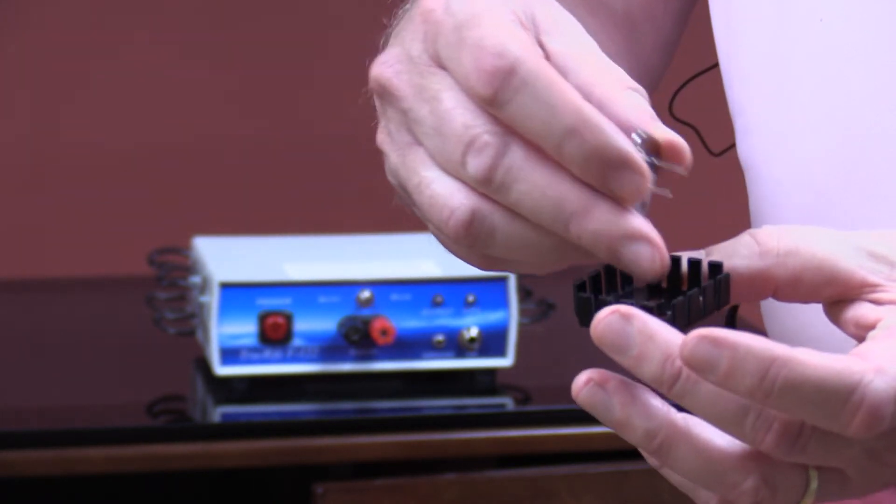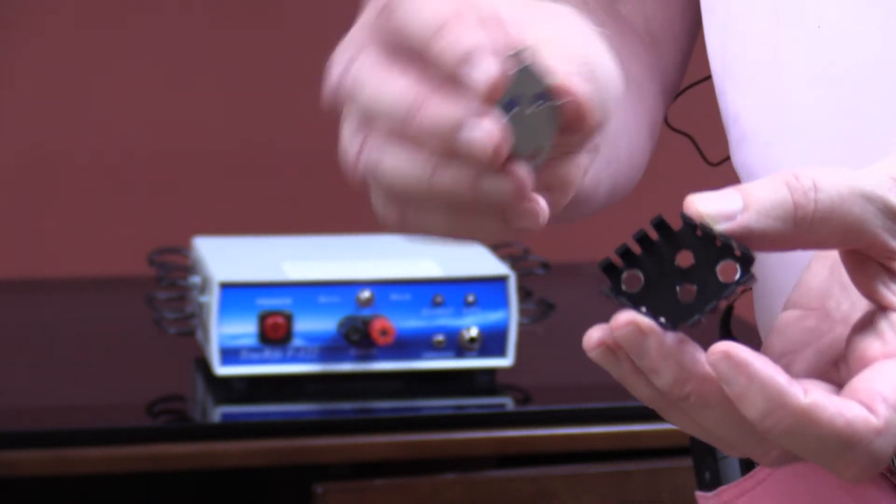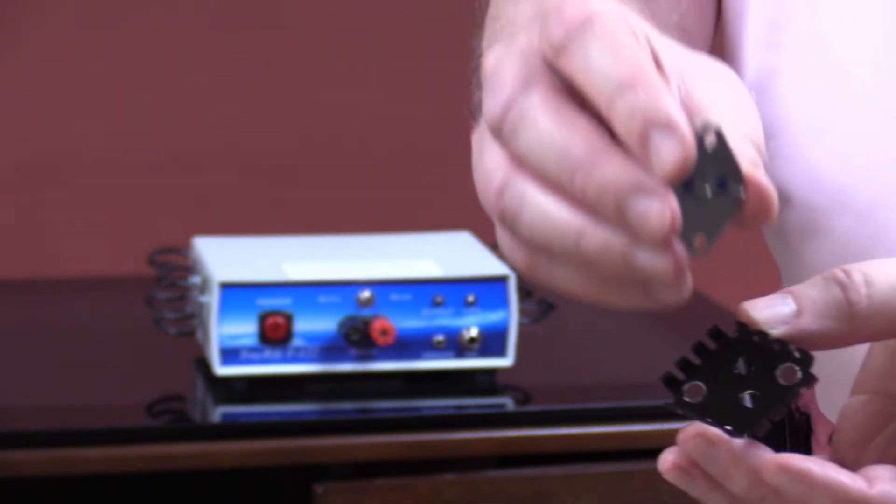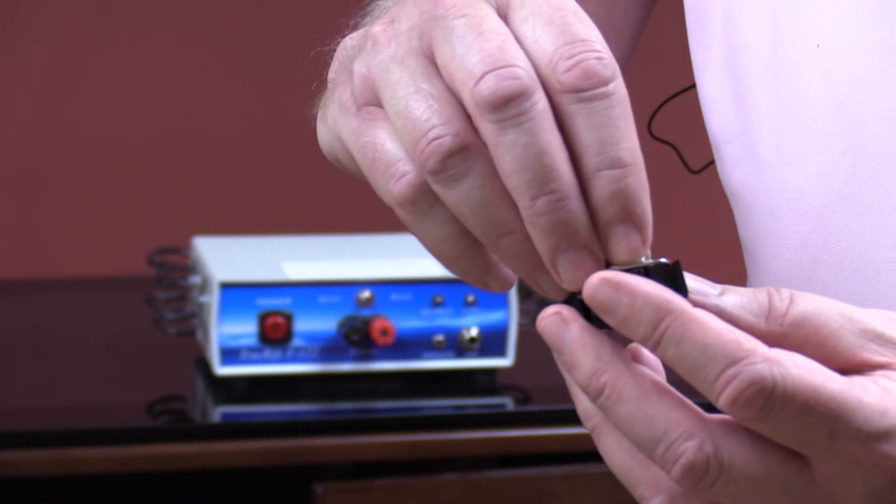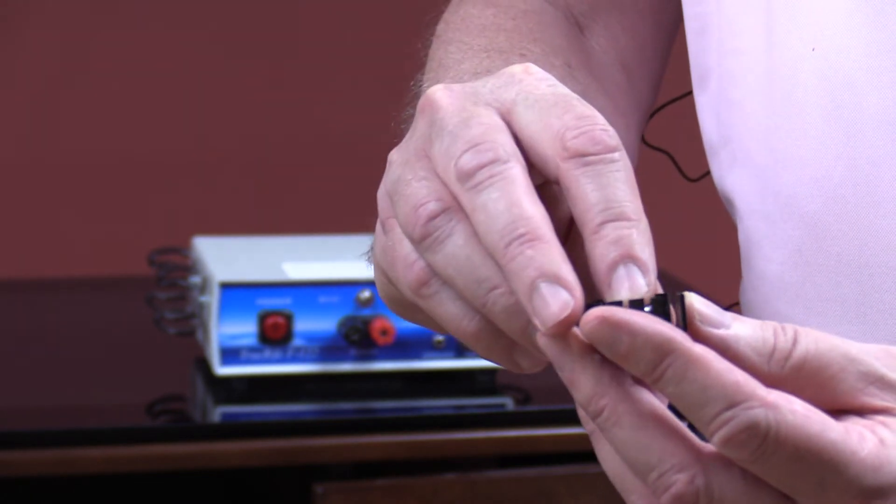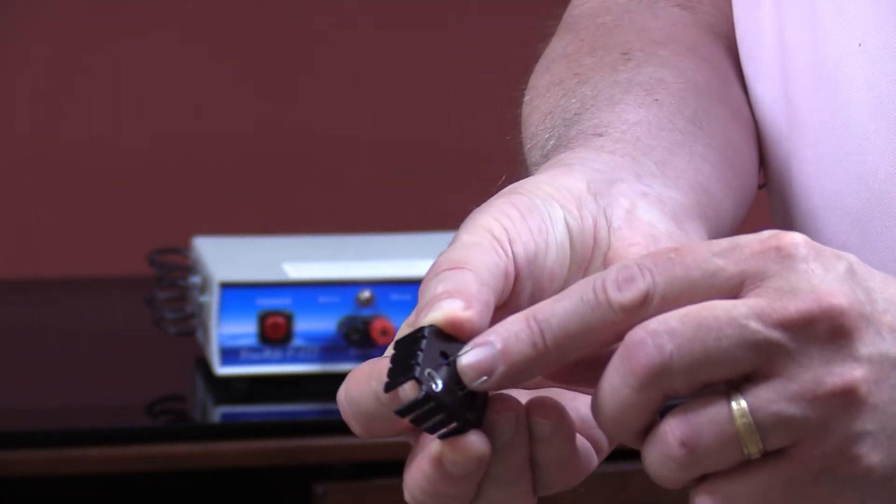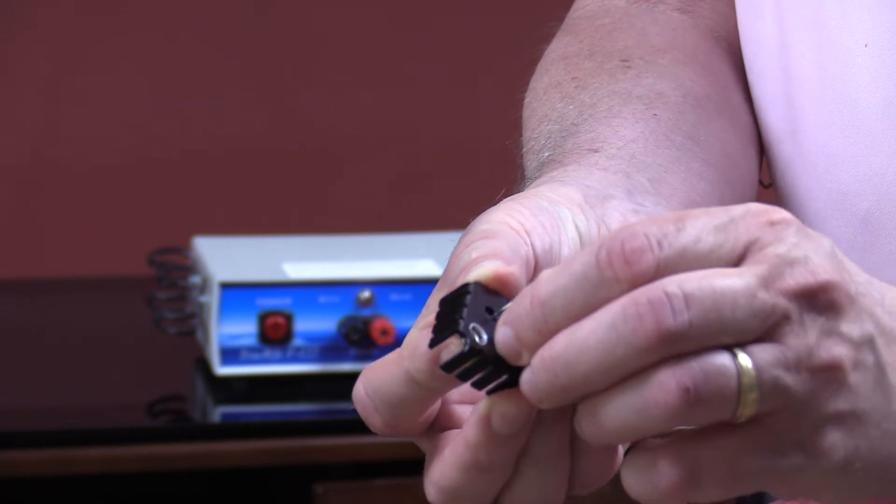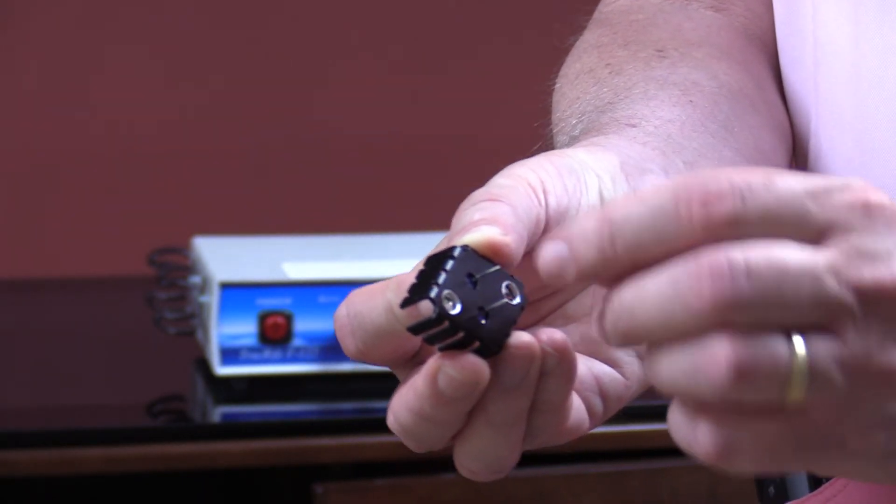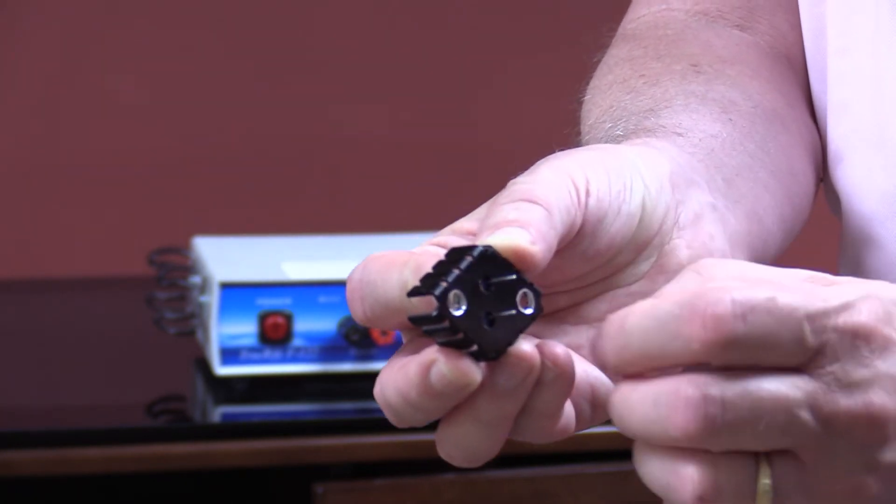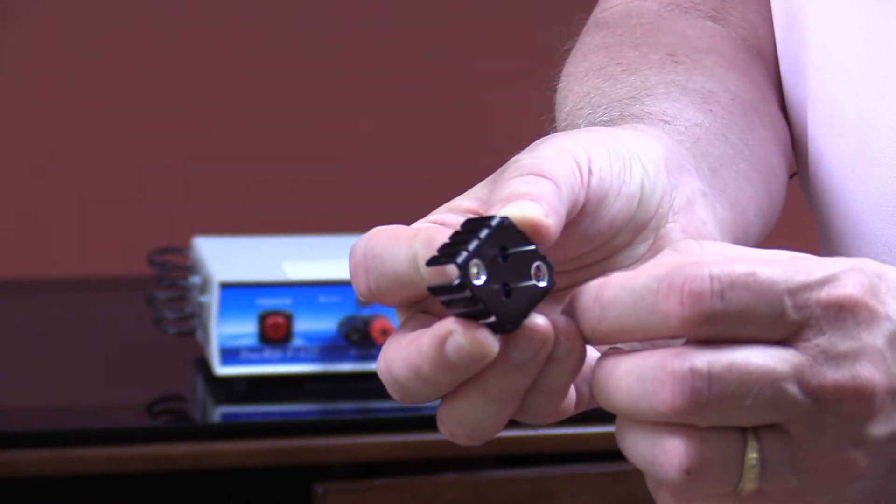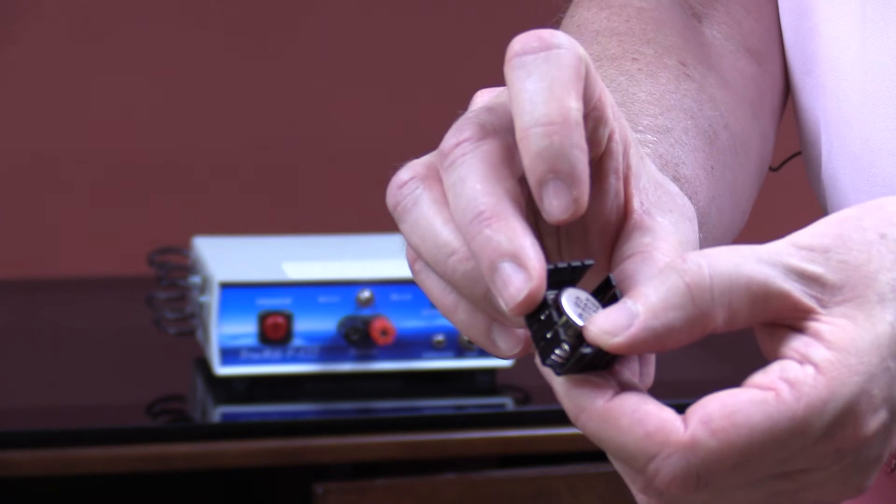So you'll notice the holes here are offset, and likewise the pins of the transistor are also offset. So you want to place the transistor in so that the offset holes match the holes here. And if you line up the holes where the screws go in, you'll notice the pins come through the holes without touching any of this metal flange. Now we're ready to replace the new transistor.